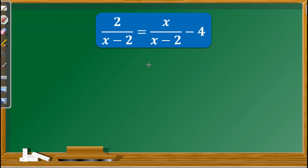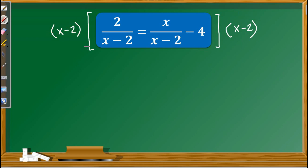Next item, we have 2 over x minus 2 equals x over x minus 2 minus 4. To answer this problem, first we need to find the LCD. As we can see in the denominator, we only have x minus 2. In order to remove x minus 2, we have to multiply both sides by x minus 2. So we have x minus 2 on both the left and right sides.